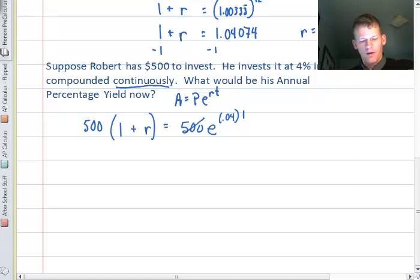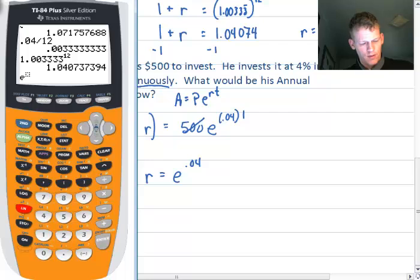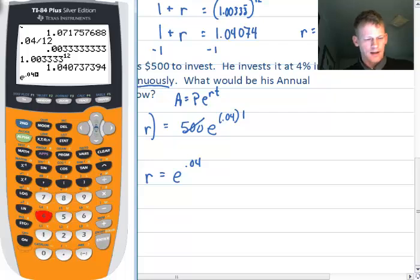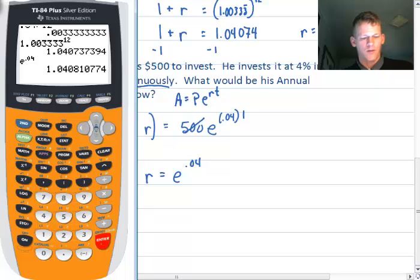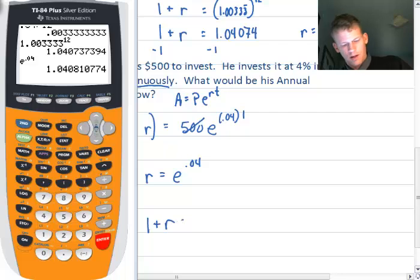So I would have to put e to the r would be .04 and t would be equal to 1. So I'm just going to put a 1 there. So when I divide out the 500, I again have 1 plus my APY, my annual percentage yield rate, is equal to e^.04. So on the calculator, let's see what that equates to. I'm going to shift the natural logarithm so I get to e, put in .04 and that tells me that I have 1.4081. So my 1 + r is equal to 1.04081.